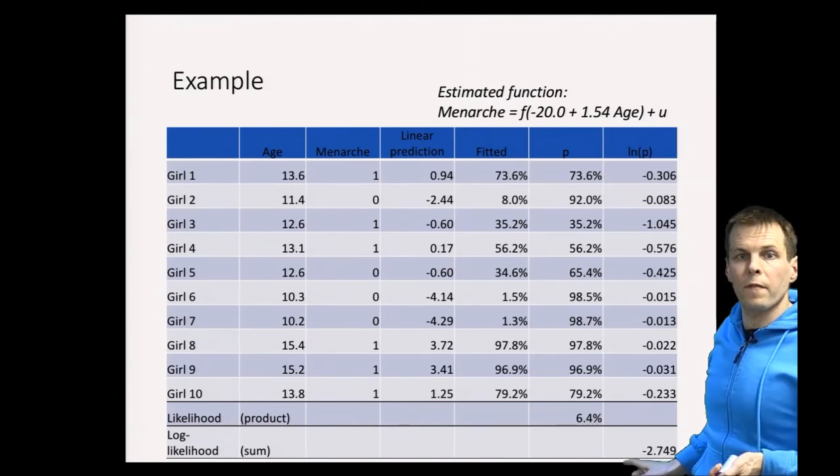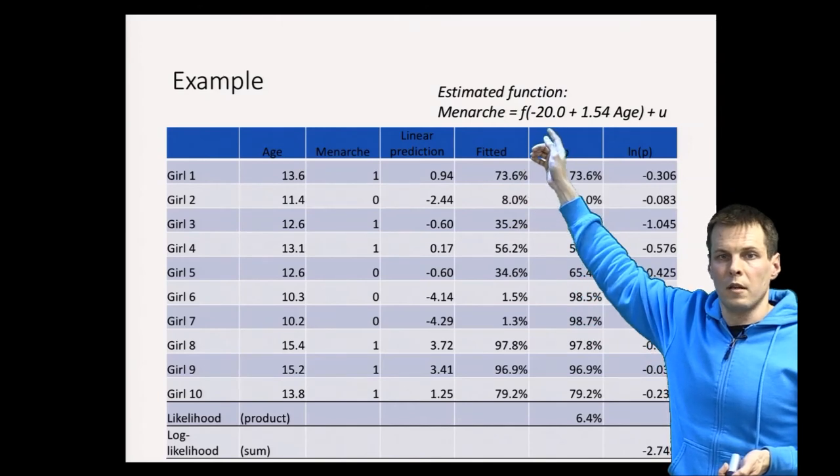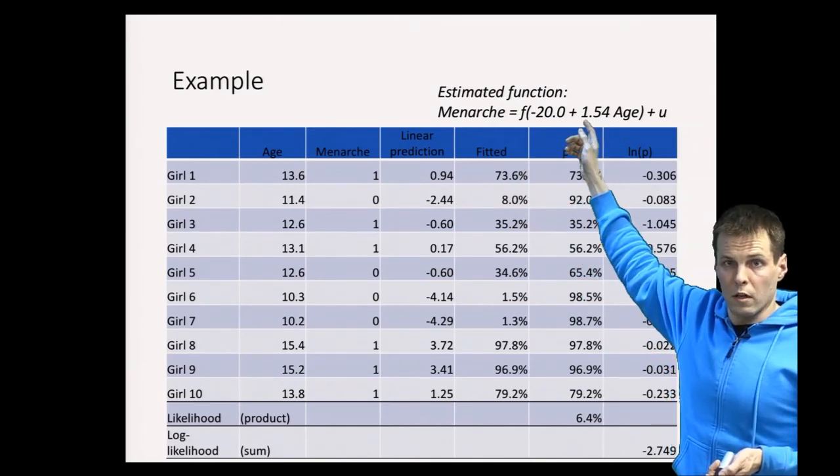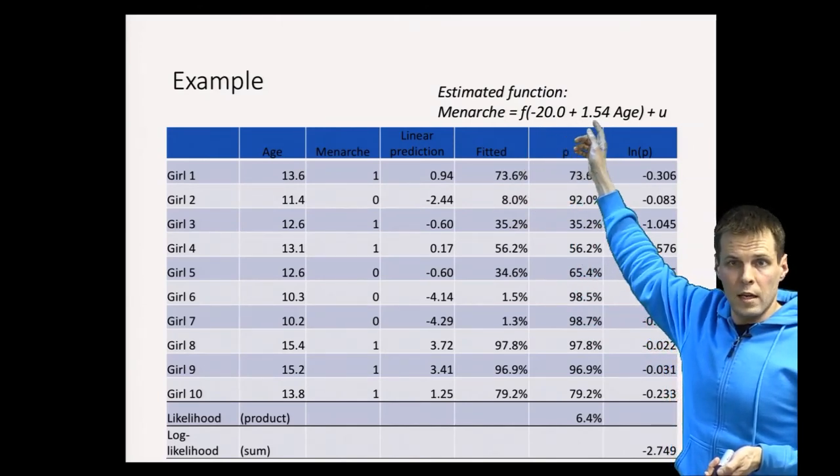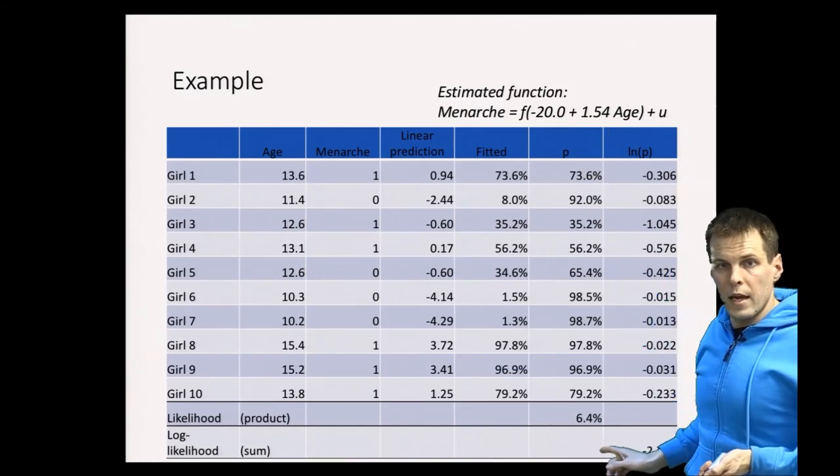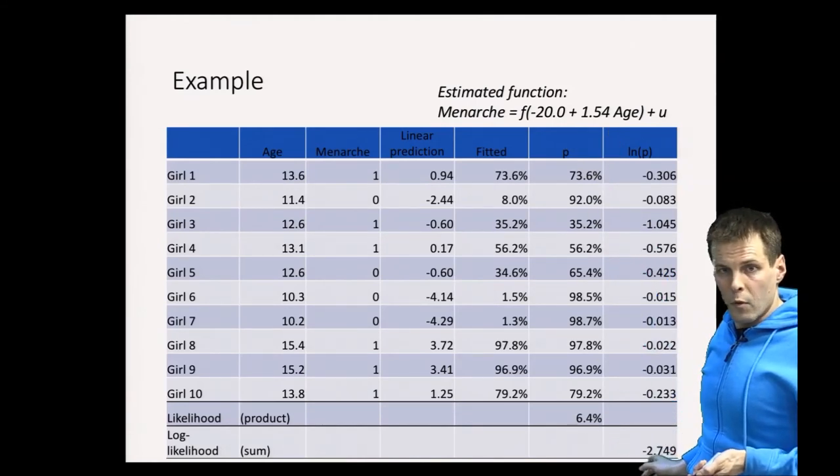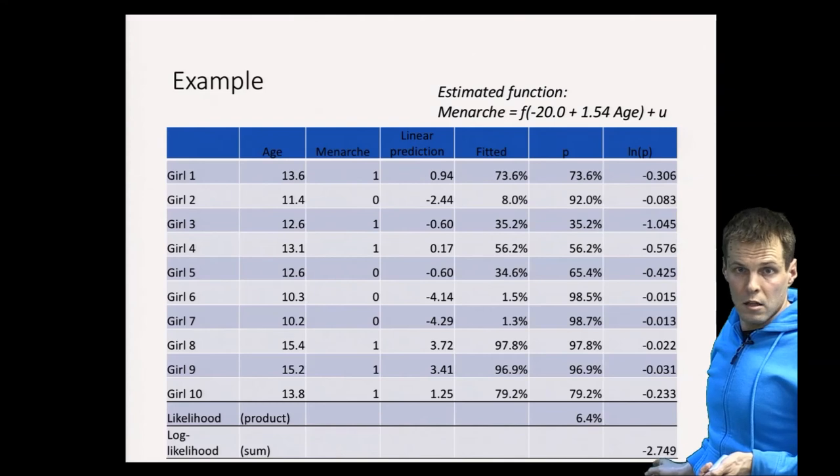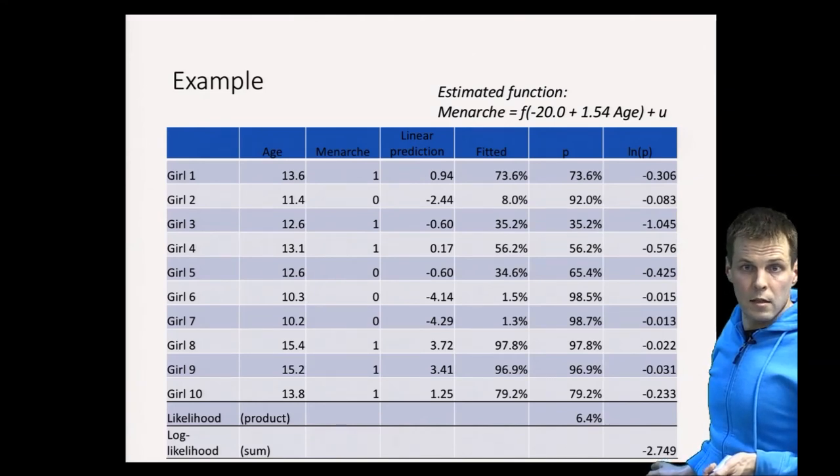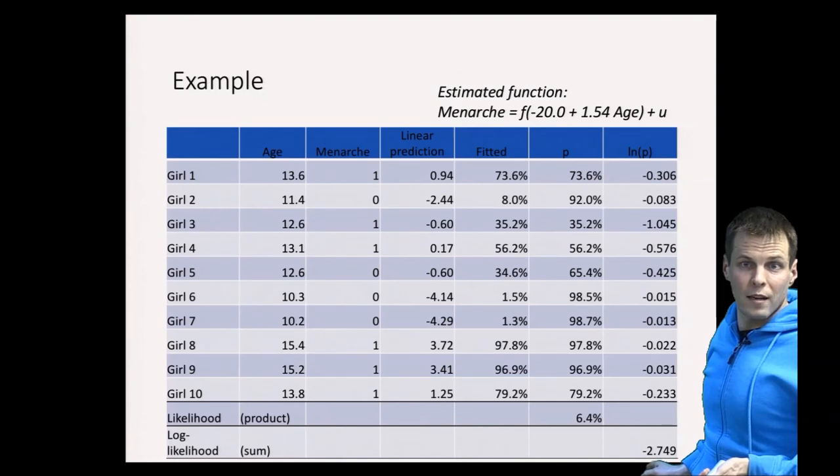We adjust the values of the intercept and the coefficient for age to make this full sample log likelihood as large as possible. In practice, this is almost always a negative number, so we try to make it closer to zero or a smaller negative number.